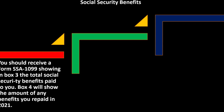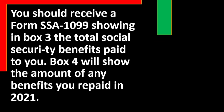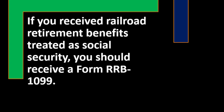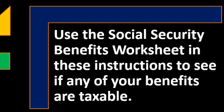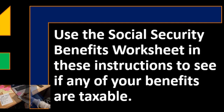We'll experiment with that more in the following presentation when we get into the tax software. For social security benefits, you should receive a Form SSA-1099, so data input into the system should be fairly straightforward. Box 3 shows the total social security benefits paid to you; Box 4 shows the amount of any benefits you repaid in 2021. If you received railroad retirement benefits treated as social security, you should receive a Form RRB-1099.